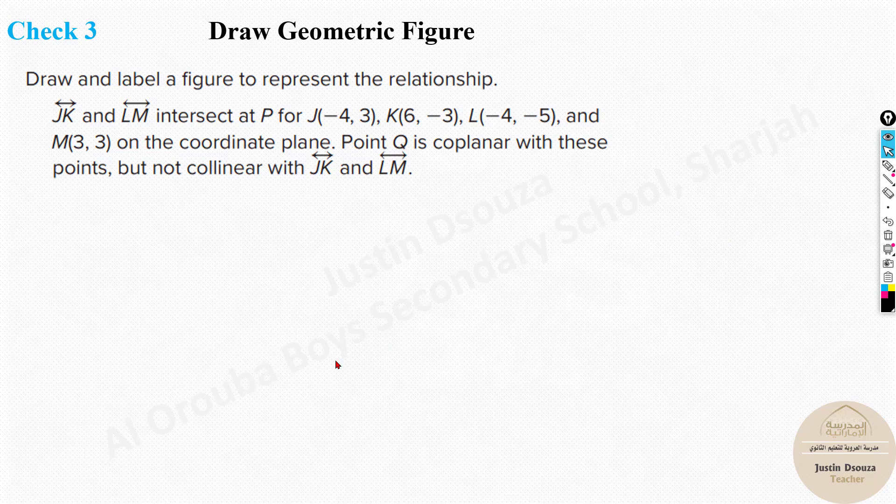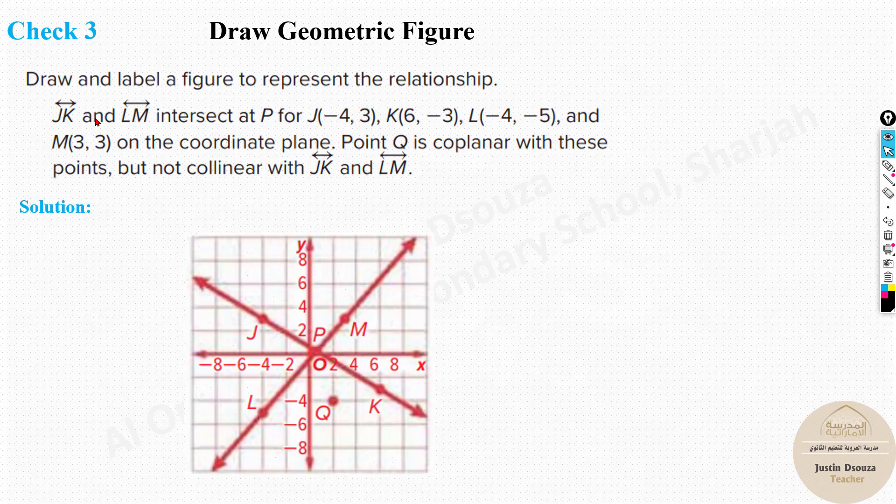Now you have a check problem. You can read through it and do it. Again, it's the same thing. We can see the answer directly over here. JK and LM are given. When you mark the points, draw and extend the line. That is very important. And J is at minus 4, minus 3. Now here, J is minus 4, positive 3. This one. And K is 6. That is over here. And minus 3. Yes. And minus 4. And you can see minus 5. That's over here. And lastly, we have 3 and 3. That's over here. So these are the points.